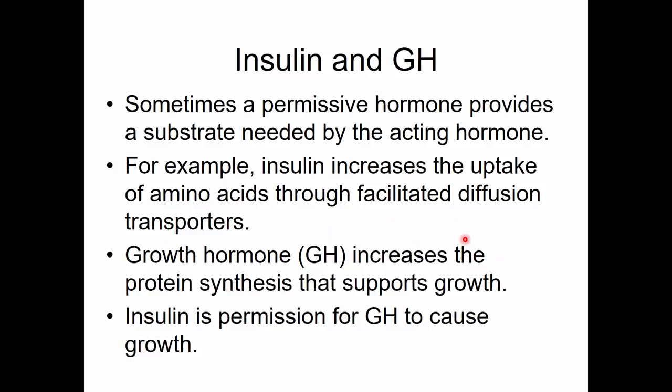Sometimes permissiveness works through a different mechanism than upregulation. Insulin increases the uptake of amino acids through facilitated diffusion transport, and growth hormone then performs protein synthesis. Growth hormone will stimulate protein synthesis, but does a much better job if insulin is providing the amino acids for that synthesis. Therefore, insulin is permissive for growth hormone in causing growth - insulin doesn't make you grow, growth hormone does, but insulin ensures amino acids are available.